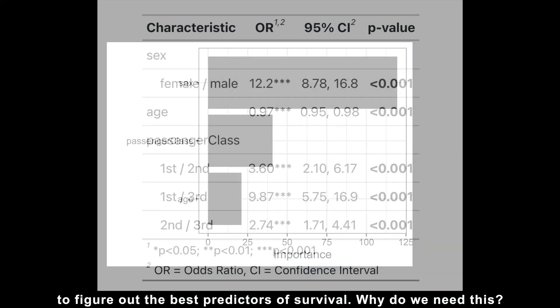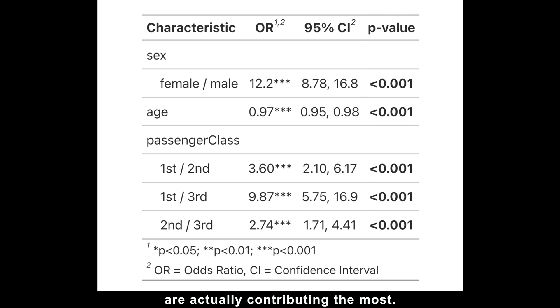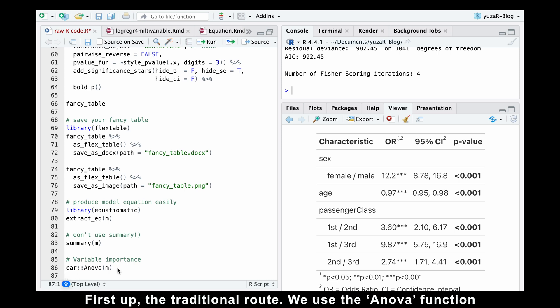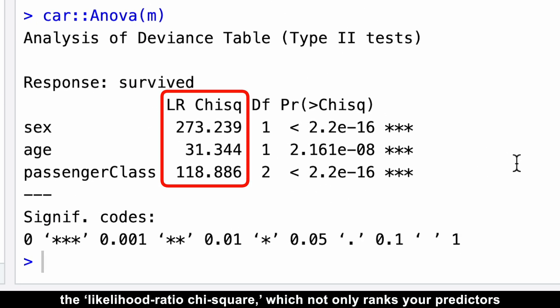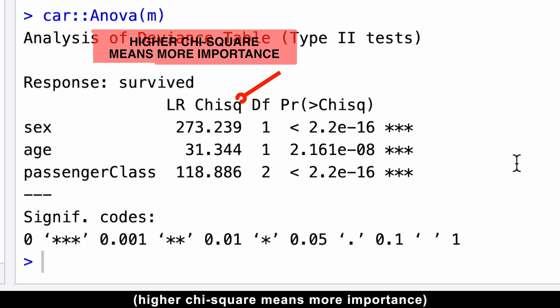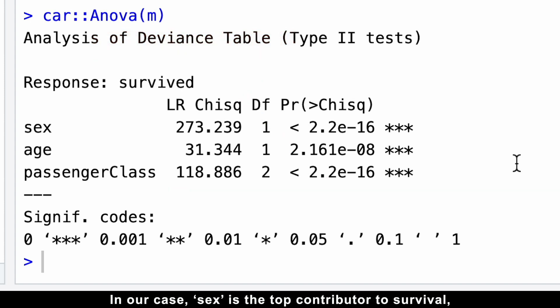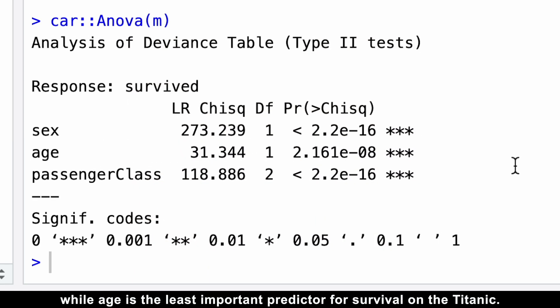Why do we need this? Well, with big sample sizes, all p-values might be significant, like in our example, making it tough to see which predictors are actually contributing the most. To rank the importance of these predictors, we can use two simple methods. First up, the traditional route. We use the Anova function from the car package. This gives us the likelihood ratio chi-square, which not only ranks your predictors – high chi-square means more importance – but also can be reported as an effect size. In our case, sex is the top contributor to survival, no pun intended, while age is the least important predictor for survival on the Titanic.